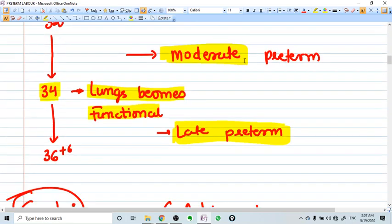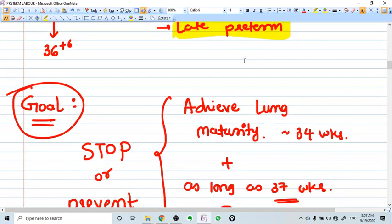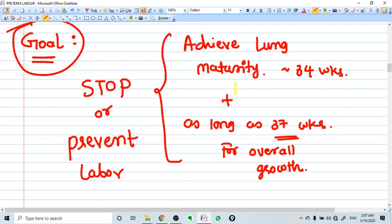So what is the goal in preterm labor? What is our goal? Stop or prevent labor up to 34 weeks. Why? Because to achieve lung maturity at 34 weeks and after that as long as possible up to 37 weeks.